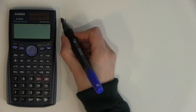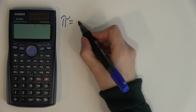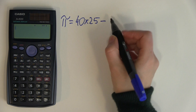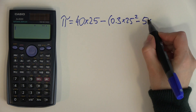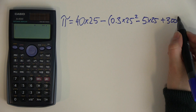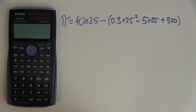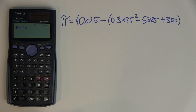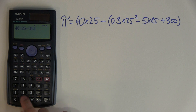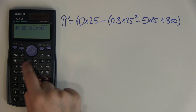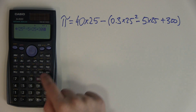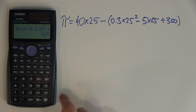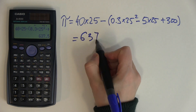Now let's calculate the profit given by: 40 times 25 minus (0.3 times 25² minus 5 times 25 plus 300). I type 40 times 25 minus, then open a bracket and enter 0.3 times 25 squared minus 5 times 25 plus 300, close the bracket, and hit equal. Pressing SD gives the decimal answer: 637.5.